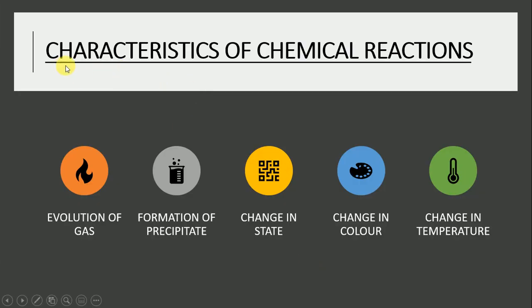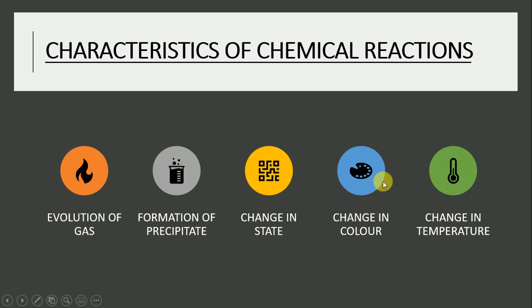Next topic is characteristics of chemical reactions. The characteristics are: firstly, evolution of gas; second, formation of precipitate; third, change in state; fourth, change in color; fifth, change in temperature. Let's talk about them one by one.